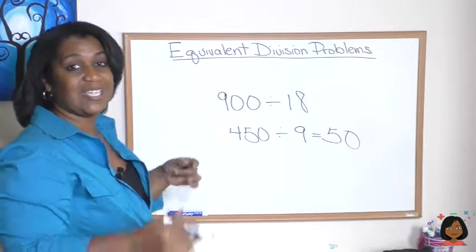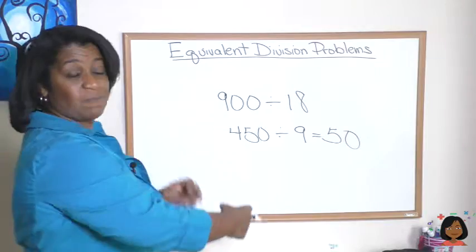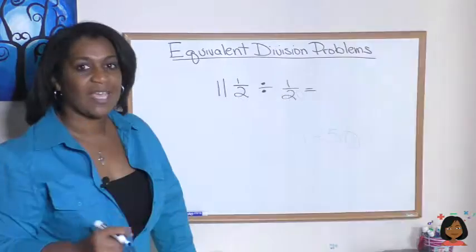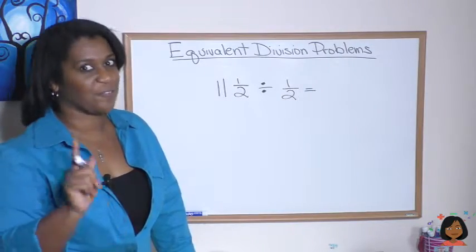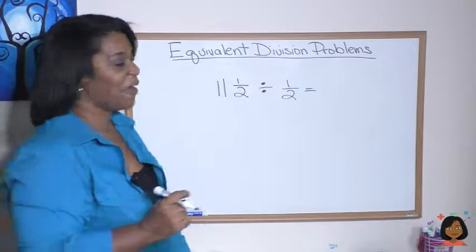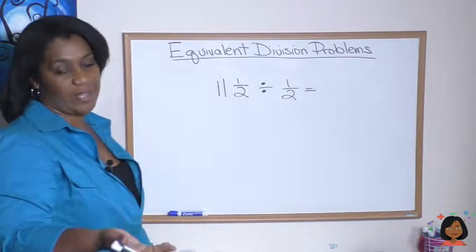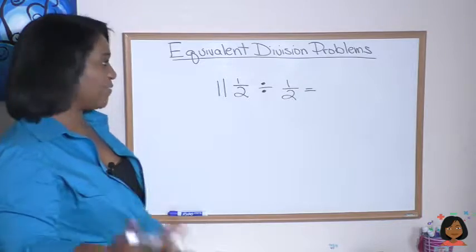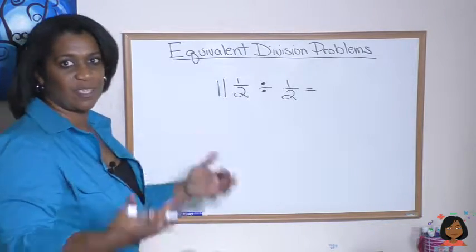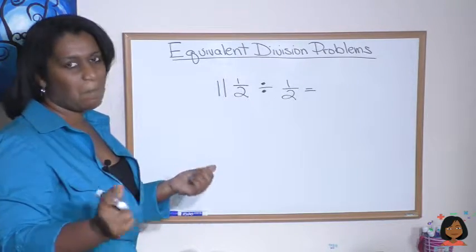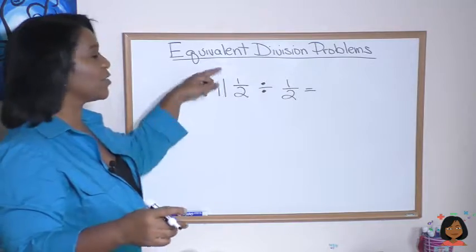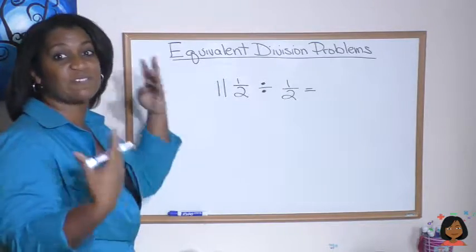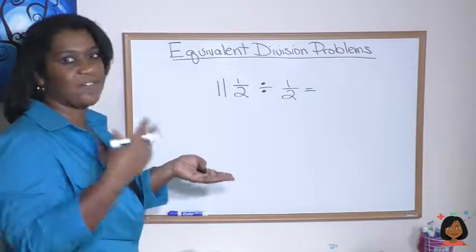So, again, the rule is you either double it or half it. It works really well for fractions. Take a look at this problem. 11 and a half divided by one half. Now, we know that when we're dividing with fractions, there's some certain things that we have to do, but what if we use this process of creating an equivalent division problem? You either half it or double it.